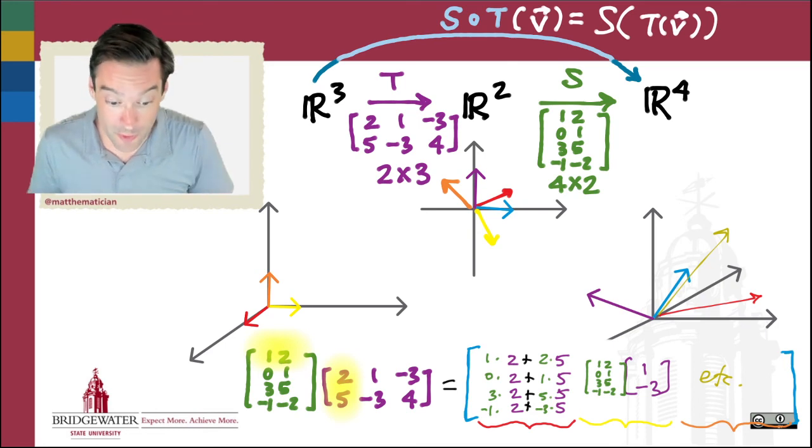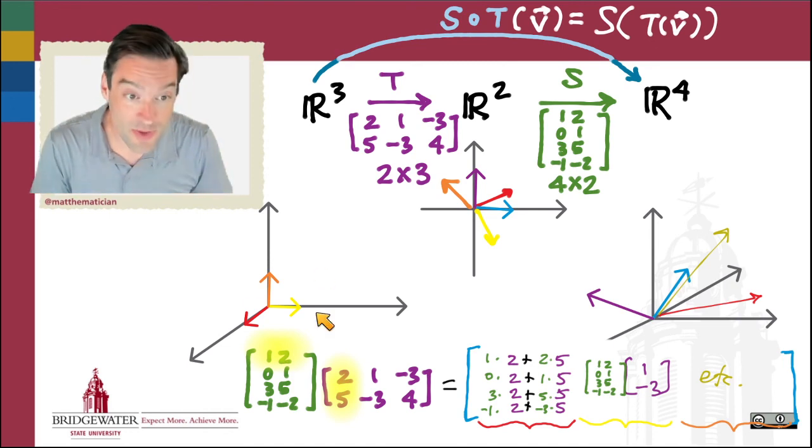But what I like and really appreciate about this book is it shows us why that arose—why it happens exactly in that way. It's because what we're doing is finding the images of the standard basis vectors through both of these transformational steps that are being chained together.